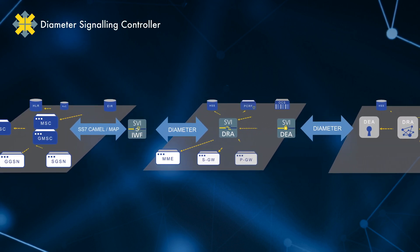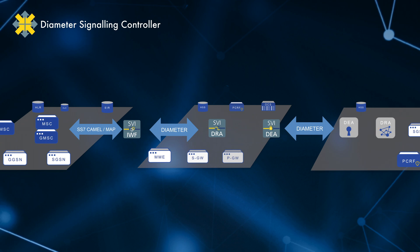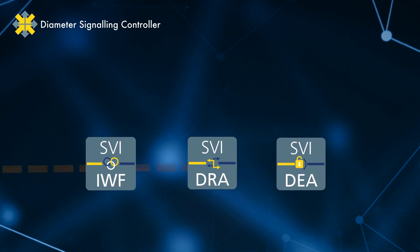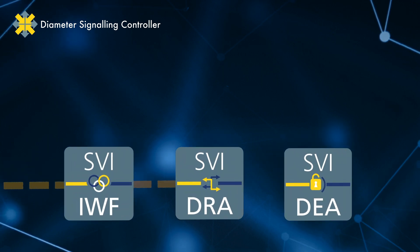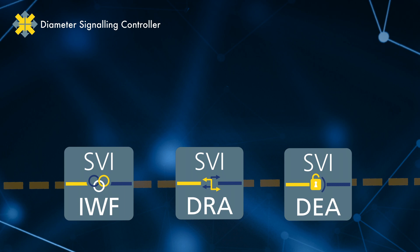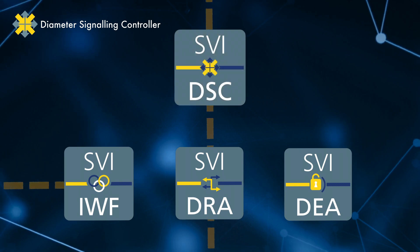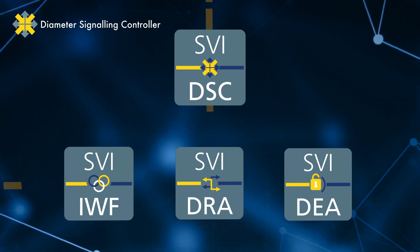The Diameter Signalling Controller provides a core set of functions to enable the optimal running of diameter-only networks, whilst also ensuring smooth integration with operators' OSS and BSS equipment, and interop with legacy networks. SQUIRE Technology's SVI DSC product provides comprehensive diameter signaling functionality.